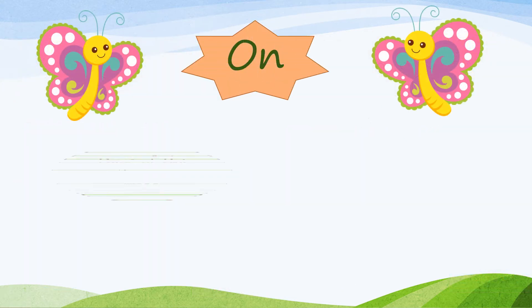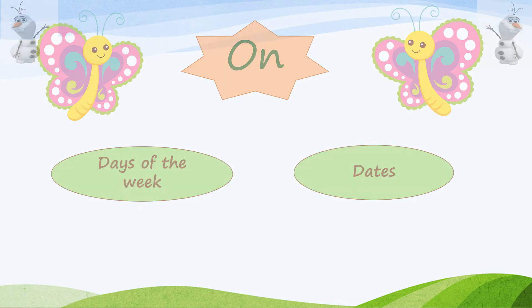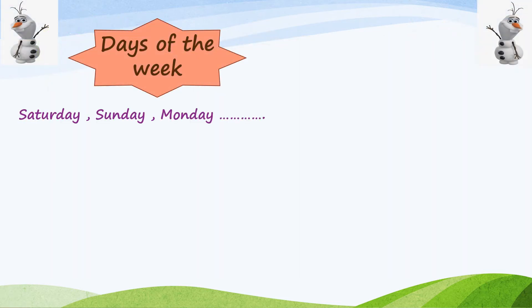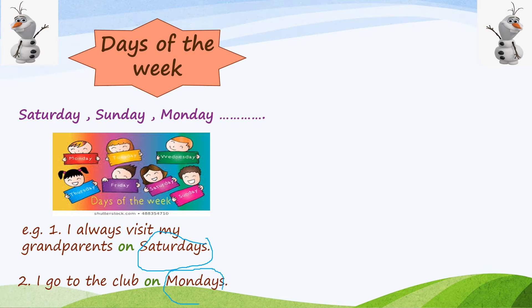The second preposition is 'on,' and it comes before days of the week and dates. What are the days of the week? Saturday, Sunday, Monday, and so on. When you find any of these days in your sentence, you have to put 'on' before it. For example, I always visit my grandparents on Saturdays. Here I have Saturdays, so I have to put 'on' before it. Also, I go to the club on Mondays. Mondays is a day of the week, so I have to put 'on' before it.